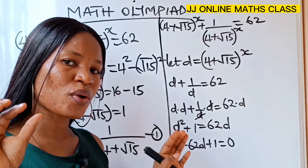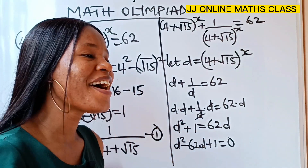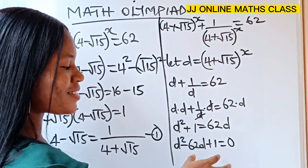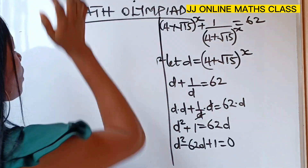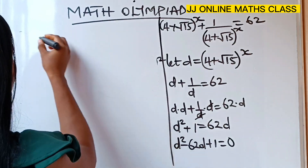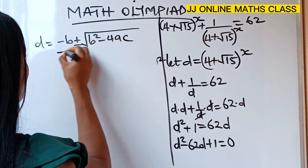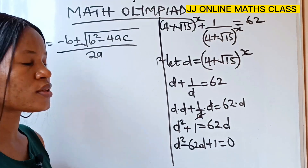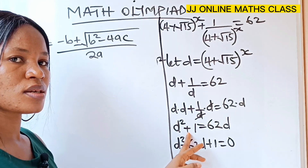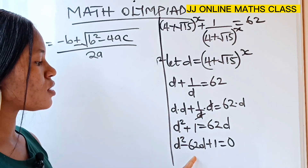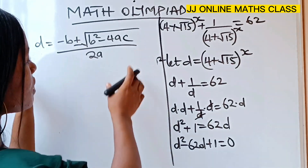We cannot solve this quadratic using factorization, so we are going to use the quadratic formula — the almighty formula. The almighty formula states that d is equal to minus b plus or minus square root of b squared minus 4ac, all over 2a. In this quadratic equation, a is the coefficient of d squared, b is the coefficient of d, and c is the constant.